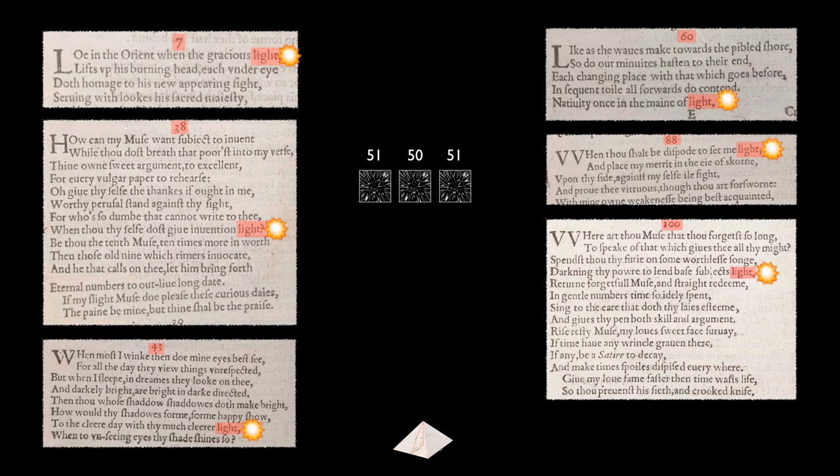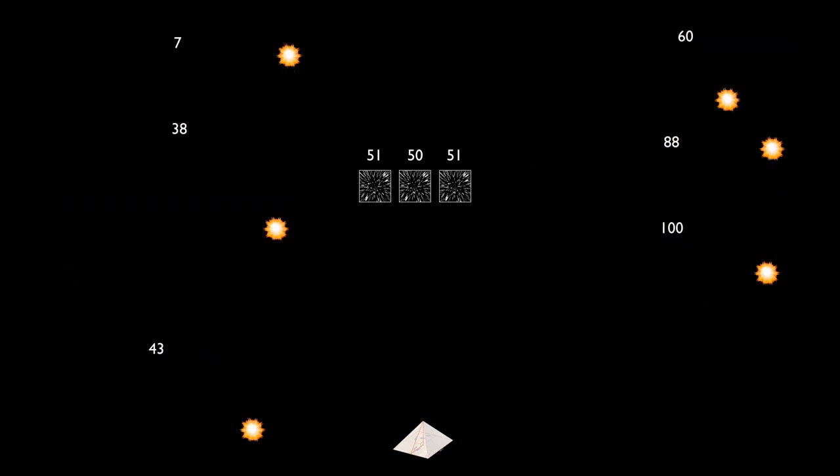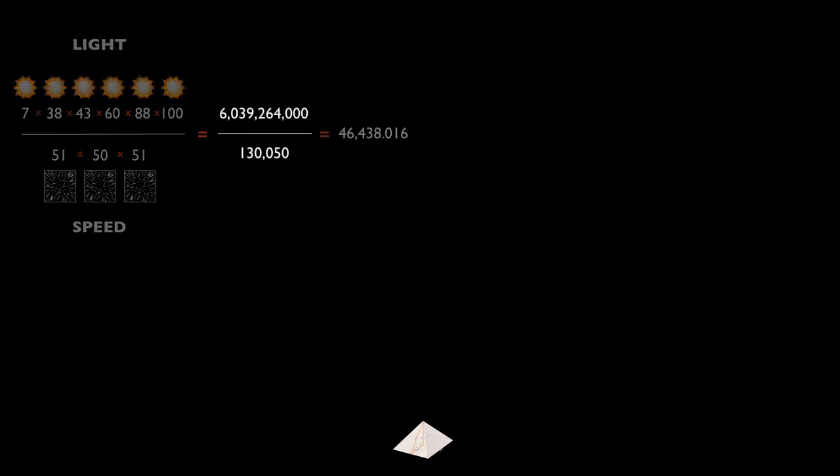All right, let's do a search on light. That occurs in six sonnets, and those are the numbers of the sonnets. And we put these aside, and we're going to multiply the light sonnets and the speed sonnets, and divide speed into light. And it gives us a number that is, frankly, unrecognizable. But he's not done yet.